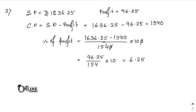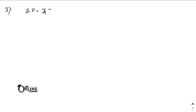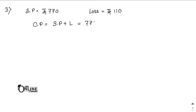Sum number three: by selling an article for rupees 770, so SP equals 770, a man incurs a loss of rupees 110. For this case, CP equals SP plus loss: 770 plus 110, which equals 880. So CP equals 880.